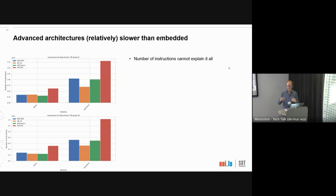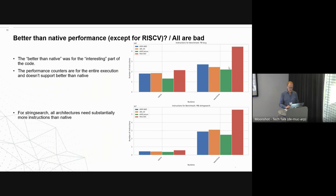I also tried to understand why the more advanced architectures were relatively slower than embedded for some benchmarks, but didn't find a good solution. The number of instructions didn't fully explain it. I also couldn't infer from the instruction count graphs why embedded architectures look relatively better, or why better-than-native performance occurs. This is an area we need to investigate further.